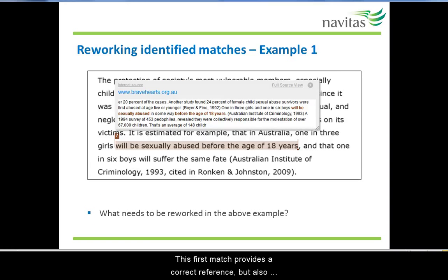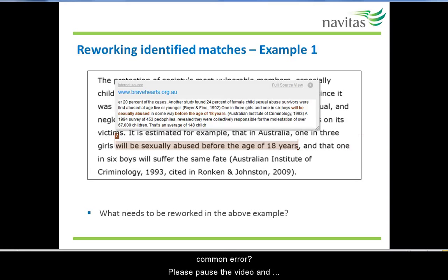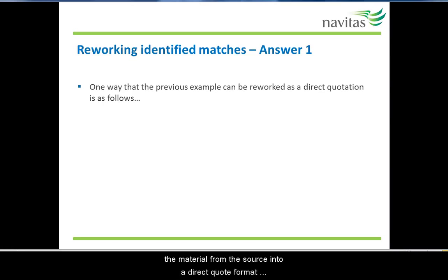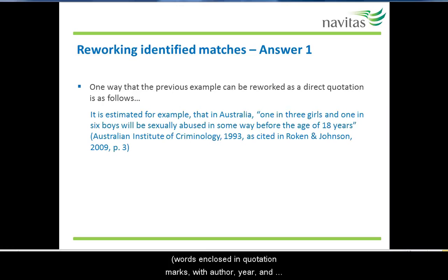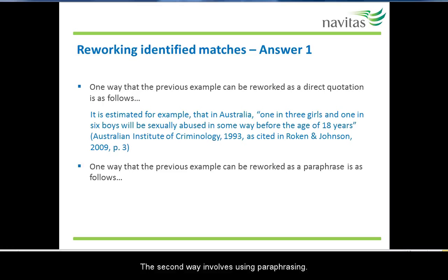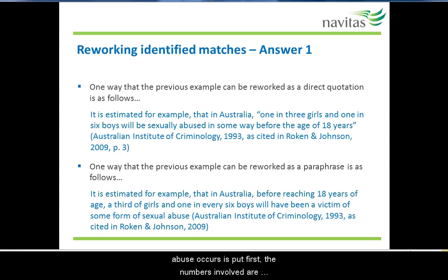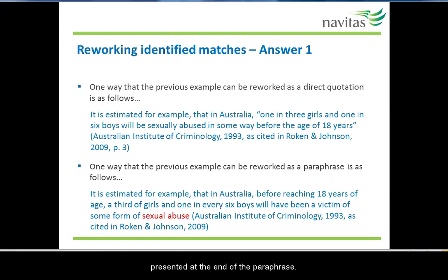This first match provides a correct reference but also includes material that is not cited correctly. Can you work out what needs to be done to fix up this common error? Please pause the video and take some notes. There are two possible ways to fix this error. The first way involves putting the material from the source into a direct quote format — words enclosed in quotation marks with author, year and a page number provided. The second way involves using paraphrasing, where the source material is reworded to convey the same meaning but in your own words. Note that the structure and original wording both need to be changed. For a paraphrase, only the author and year are needed.